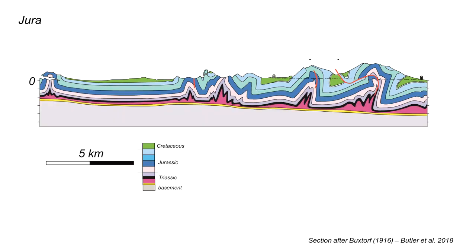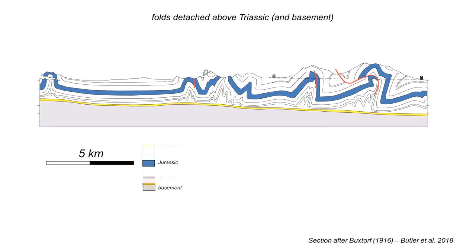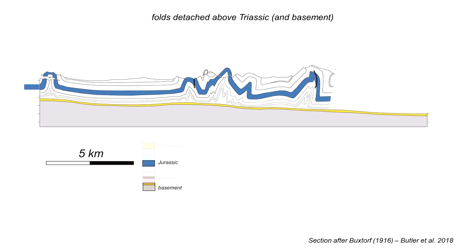Here is Buxtorff's complete cross section, and you can see we've got folded strata, chiefly of Jurassic age, those blue rocks, overlying a basal detachment along the top of the yellow horizon, which is a basal unit of Triassic age, which in turn overlies basement. Let's apply the approach developed by Chamberlain to these folds. We'll just consider some of these folds and we need to complete a little bit that's been eroded away, so we can estimate the full shape of this layer of Jurassic strata.